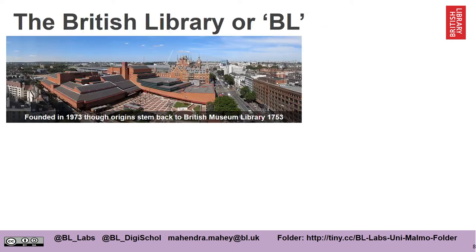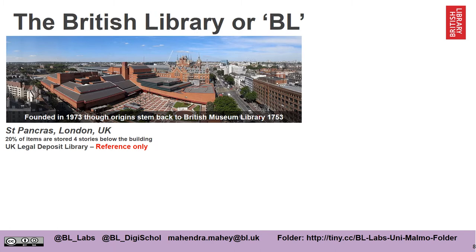The British Library, or BL, was founded in 1973, though its origins stem back to the British Museum Library in 1753. Here you can see the building in London, St Pancras — part of the building actually resembles a ship. At St Pancras, 20% of our items are stored and some of the storage area is actually beneath the building, about four storeys.